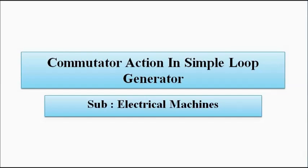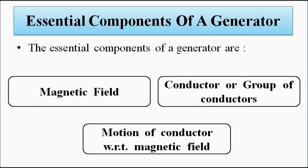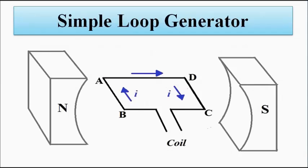Hello friends, welcome to Engineering Tutorial. In the previous video we discussed the simple loop generator — the basic introductory concepts, generator principles, and Faraday's and Fleming's rules. There we discussed the three main parts of the loop generator: the magnetic field, the conductor or group of conductors, and the movement of the conductor in the magnetic field.